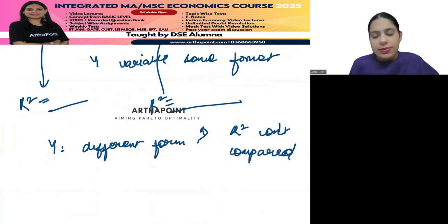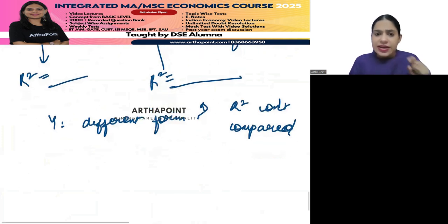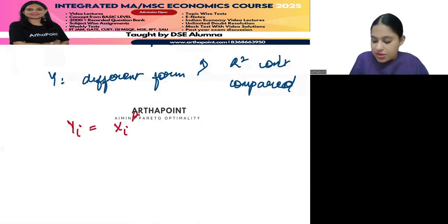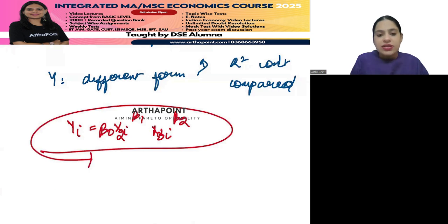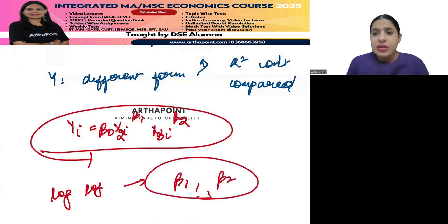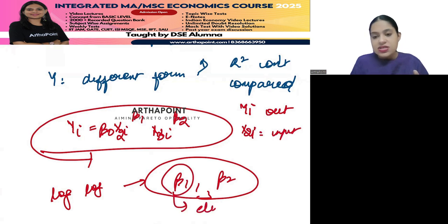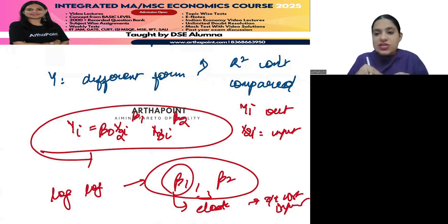When the Y variable is in the log format in one model and in normal format in the other, and they ask you to compare the R-squares - remember that when Y is in different forms, R-squares cannot be compared; we cannot justify which model is better. Also, they can give you a Cobb-Douglas form Yi = X2i^β1 · X3i^β2 · exp(u) and ask you to convert it into a log-log model and interpret β1 and β2 as elasticity of output with respect to input.